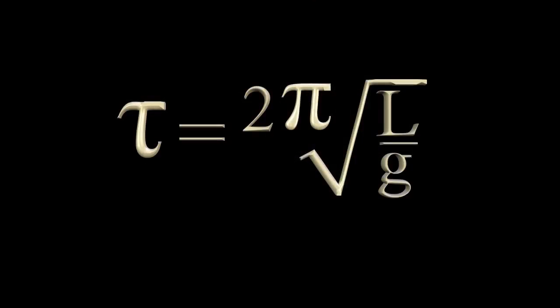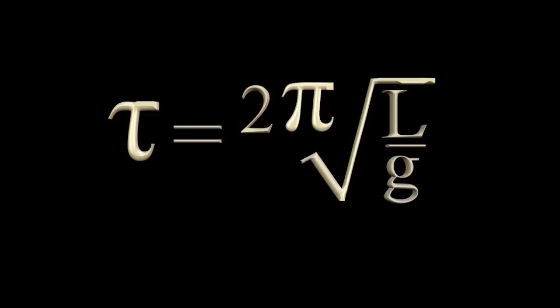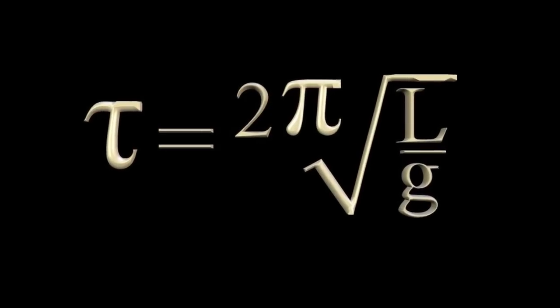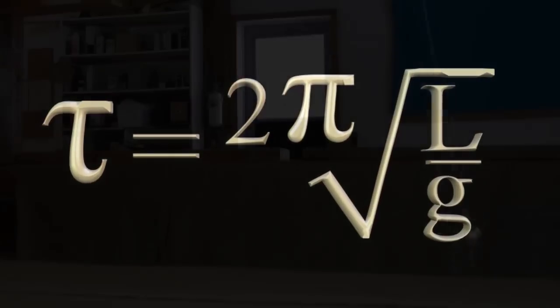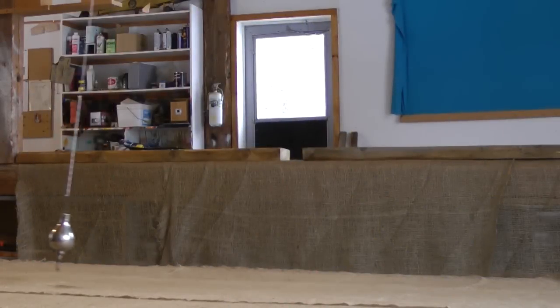This collection of letters and symbols represents centuries of intellectual effort. A gift from the past, this formula derives the period of a pendulum and interestingly gives us a method for measuring acceleration due to gravity. Something you can do with simple equipment at home.